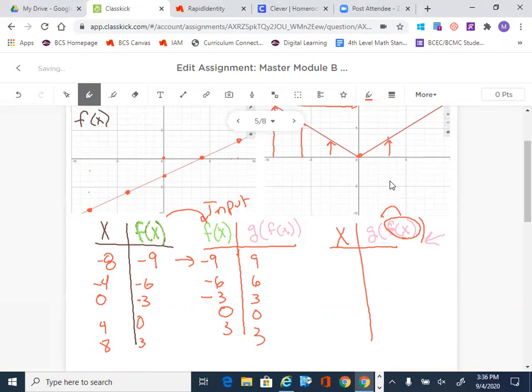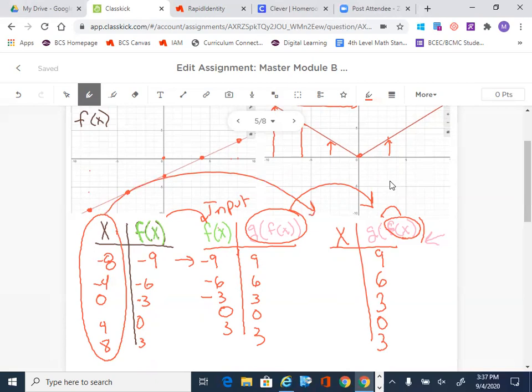And the last thing I'm going to do is I'm going to now take those points and they are now making the graph of g of f of x. So that comes over here. This is now our outputs, our final outputs: 9, 6, 3, 0, 3. But our original inputs that we started with are actually right here. This is the most confusing part. I have to take those original inputs and bring them over this way.